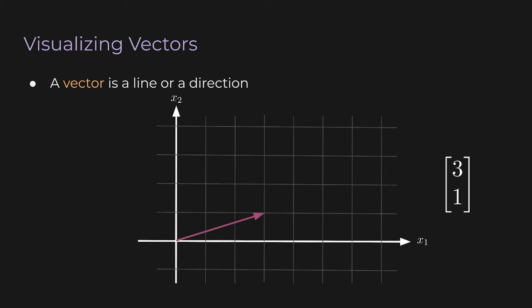You might be wondering, what's the difference between a point and a vector? A vector doesn't have to start at the origin — you can place the tail anywhere. A vector shows the difference between two points; you can translate it anywhere in the 2D plane. The important thing is that you don't change the angle or the length of the vector. Those are the two properties that make a vector unique.